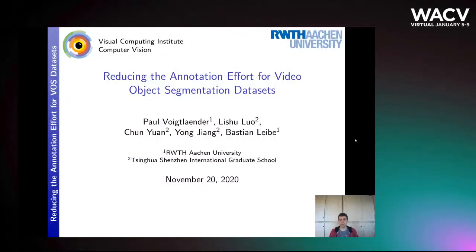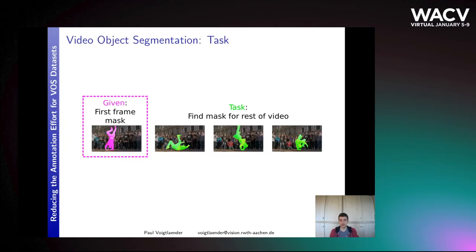Hello, I'm Paul and I'm going to introduce our work about reducing the annotation efforts for video object segmentation datasets. We are given a video together with the ground truth segmentation mask for an object in the first video frame, and the task is to automatically segment the same object in all further frames of the video.